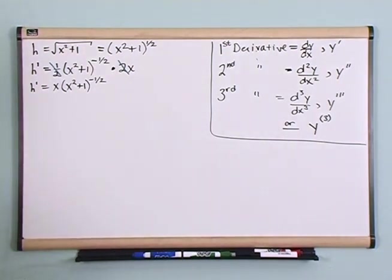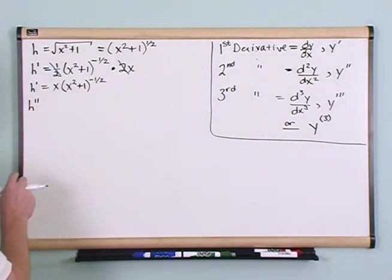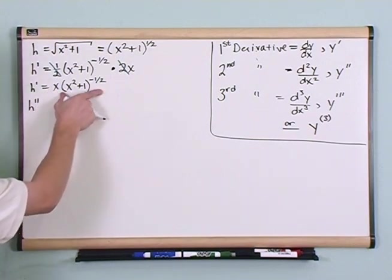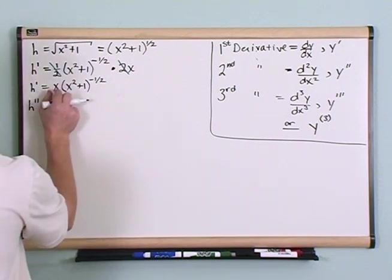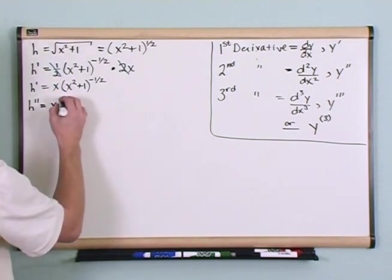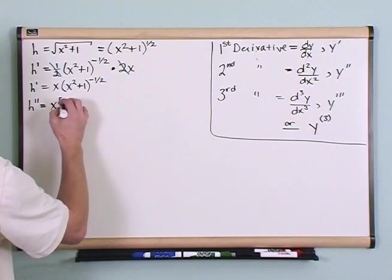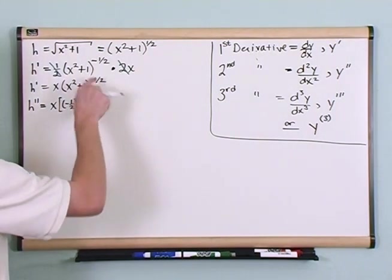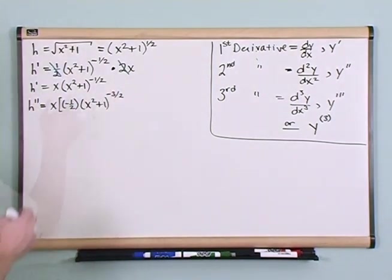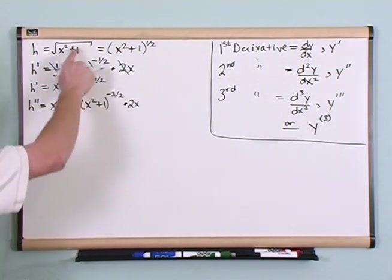The problem wants us to calculate the second derivative. The second derivative is the derivative of the first derivative. Here we have a function of x times another function of x, so we're going to have to use the product rule. The first term is x, so it's the first times the derivative of the second term. The derivative of the second term is going to be negative 1/2 times (x² + 1) to the negative 3/2 — because negative 1/2 minus 1 is negative 3/2 — and we multiply by the derivative of the inside, which is 2x.